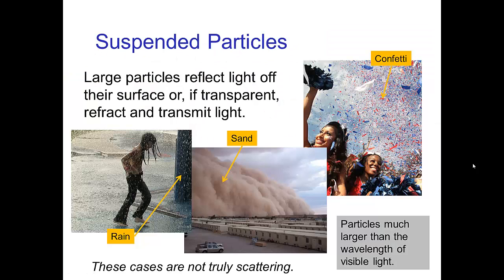Now, larger size particles don't actually have true scattering. They actually reflect the light off the surface, or if they're transparent like rain, then we have some refraction and transmission and possibly also some reflection. So when we see rain, or sand in a sandstorm, or other sorts of suspended particles, what we're really seeing is reflection from the surfaces of those particles. When you see a rainbow, what you're actually seeing is reflected light from the water droplets.